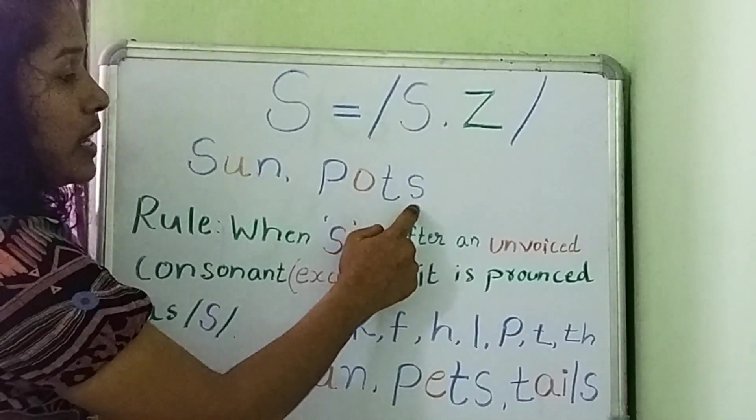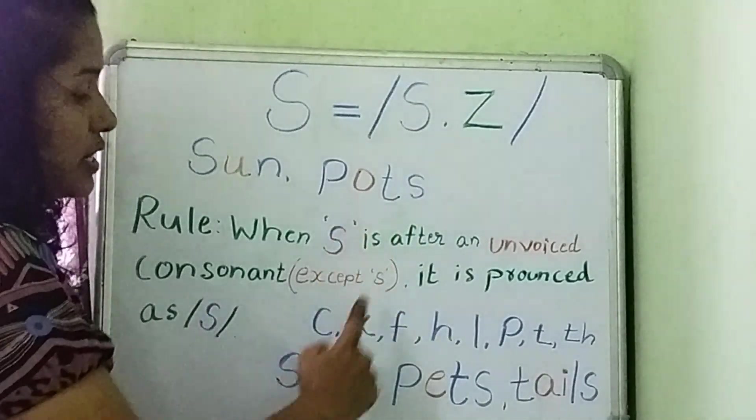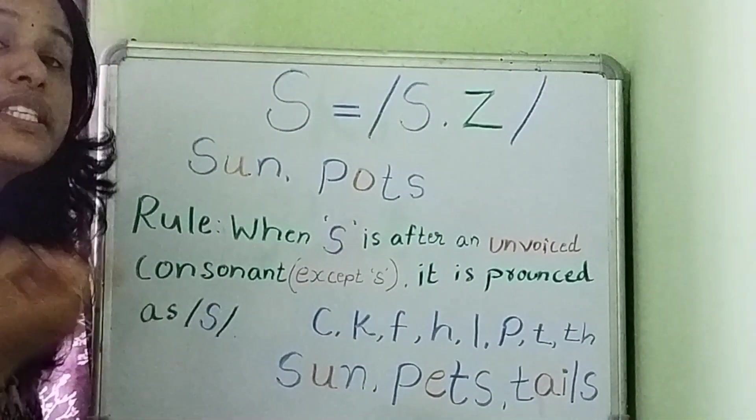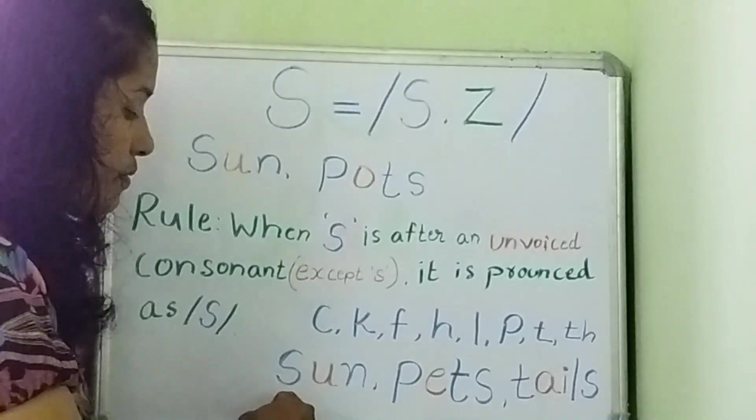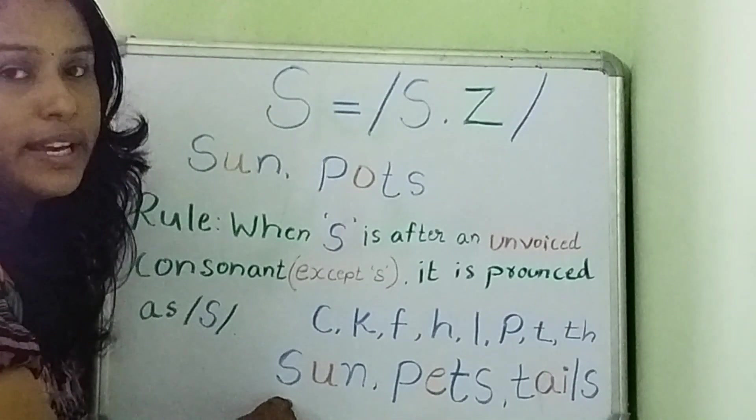Then, when S comes after an unvoiced consonant, S will say its first sound. That is S. The beginning sound is always S.